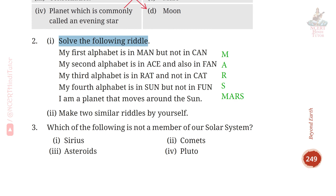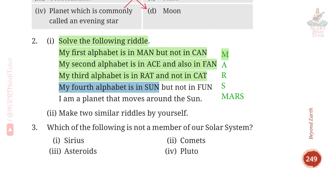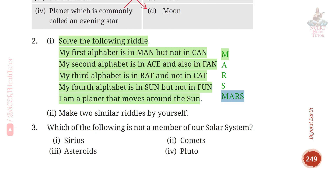Question 2, First: Solve the following riddle. My first alphabet is in 'man' but not in 'can,' so the answer is M. My second alphabet is in 'ace' and also in 'pen,' so the alphabet is A. My third alphabet is in 'red' and not in 'cat,' so the alphabet is R. My fourth alphabet is in 'sun' but not in 'fun,' so the alphabet is S. I am a planet that moves around the sun — so the planet is Mars.